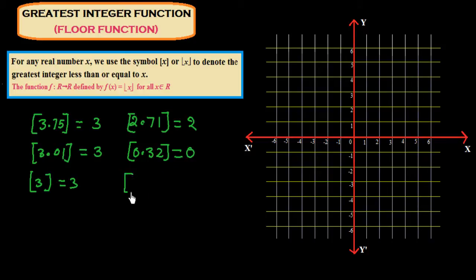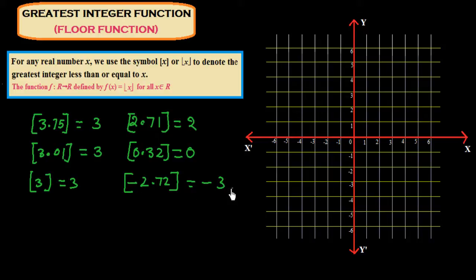Now, if we have to find the greatest integer function of a negative number like minus 2.72, we get minus 3, because the greatest integer before minus 2.72 is minus 3. In this way we could get the greatest integer less than or equal to x — here it is equal to x, here it is less than x.